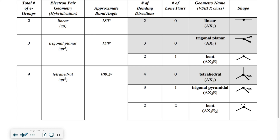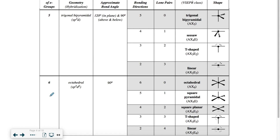In addition to filling things out based on the program, you could also use the reference sheet from class. With four total electron groups, we're in the tetrahedral family — tetrahedral electron geometry. Going across, bond angles are 109.5 for all members of that family, decreasing slightly if we have a lone pair. In this example with four bonding directions and zero lone pairs, the molecular geometry name is also tetrahedral. There were two pages to this sheet — one covering two through four electron groups, and another covering five and six. There is also a PDF posted on Classroom if you no longer have your paper copy.